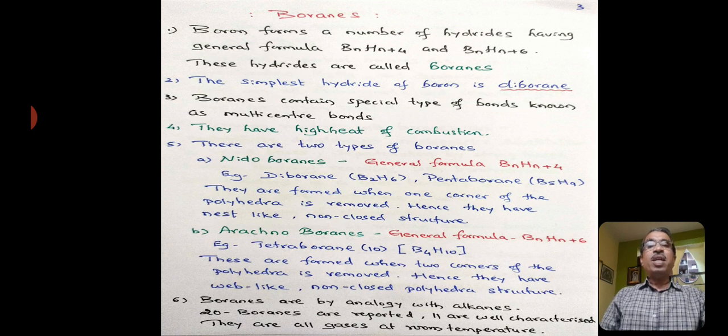Boranes contain a special type of bonds known as multi-center bonds. This is the peculiarity of boranes. In other compounds like alkanes, between the carbon and hydrogen, you have a covalent bond. But here, we have this special type of bonding between the boron and hydrogen, which we discuss in a later stage.